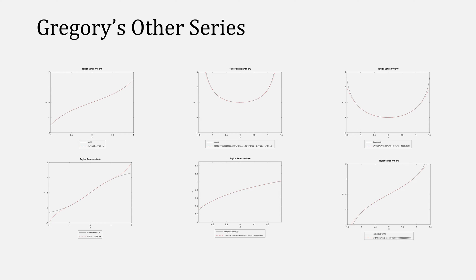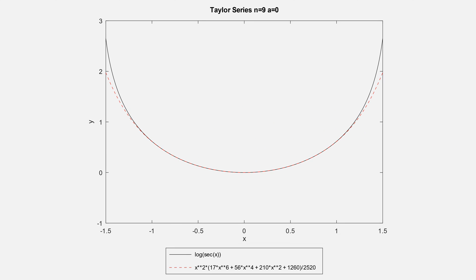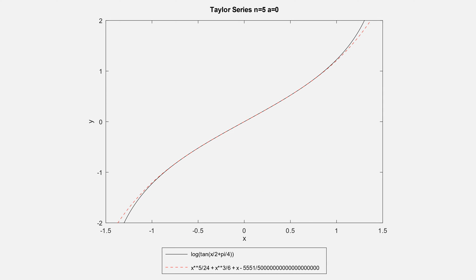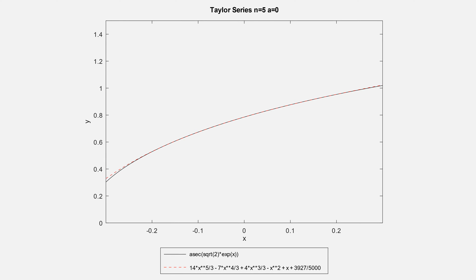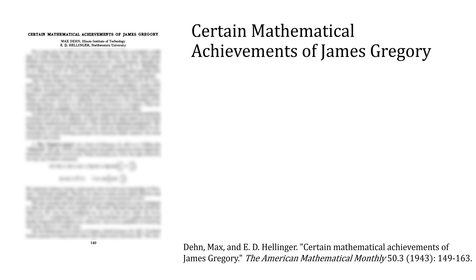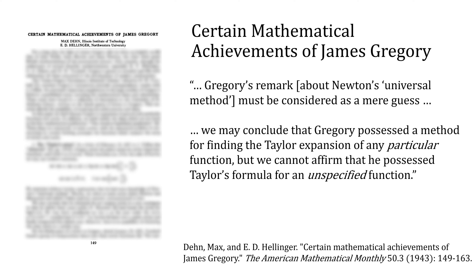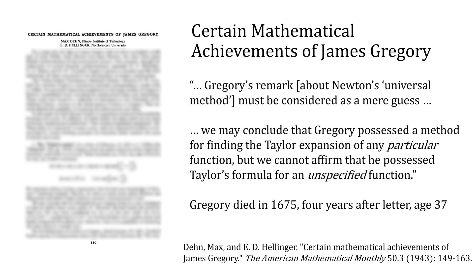These were the other series that Gregory sent, and if we zoom in, you can see how accurate these polynomial approximations are to these complex trigonometric functions. In the paper "Certain Mathematical Achievements of James Gregory," the authors write that Gregory's remark about Newton's universal method must be considered as a mere guess — he essentially thought that Newton had already figured this out. They also conclude that Gregory possessed a method for finding the Taylor expansion of any particular function, but they cannot affirm that he possessed Taylor's formula for an unspecified function. Gregory soon became ill and died four years after that letter.